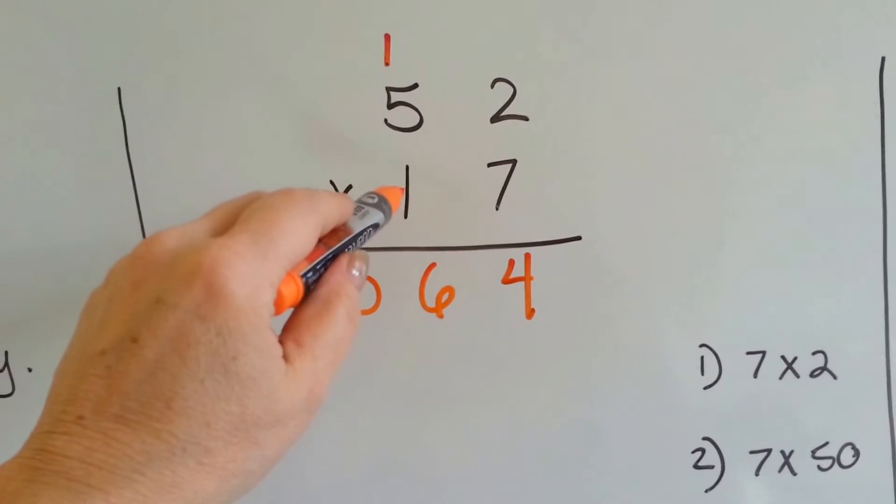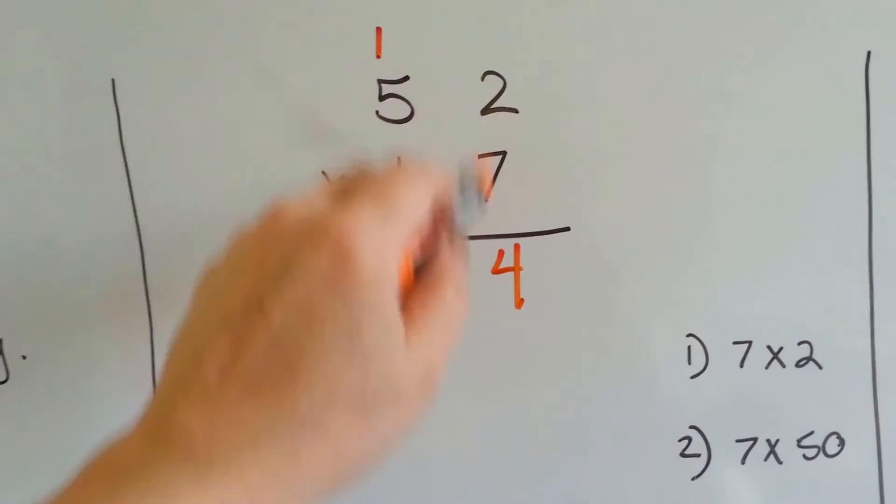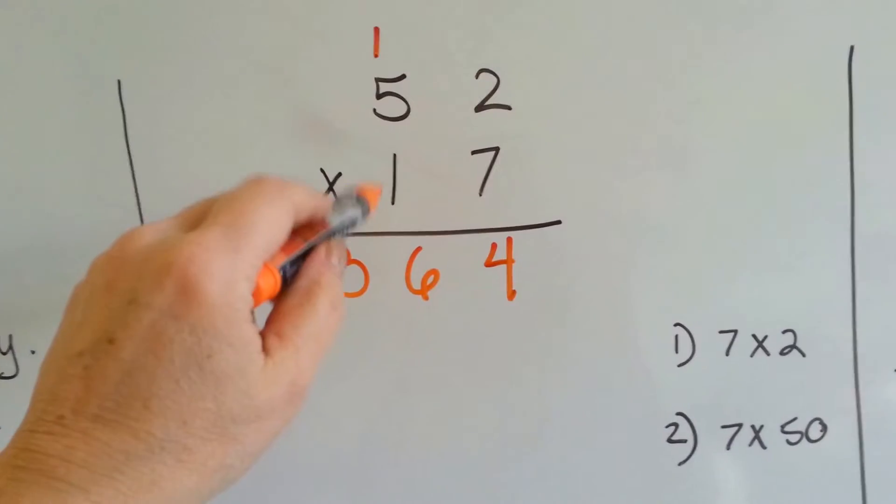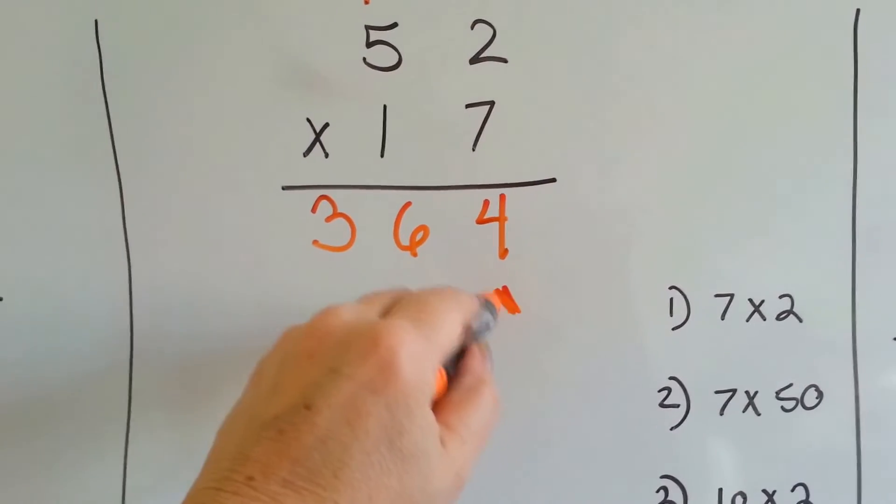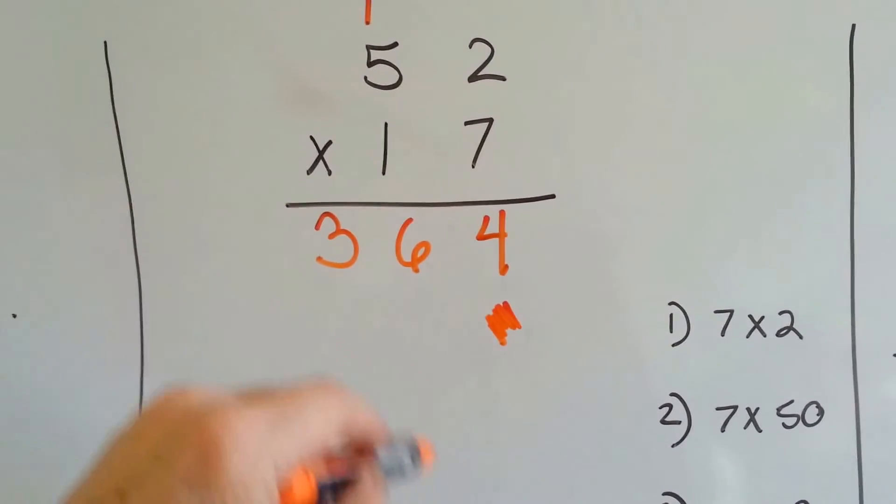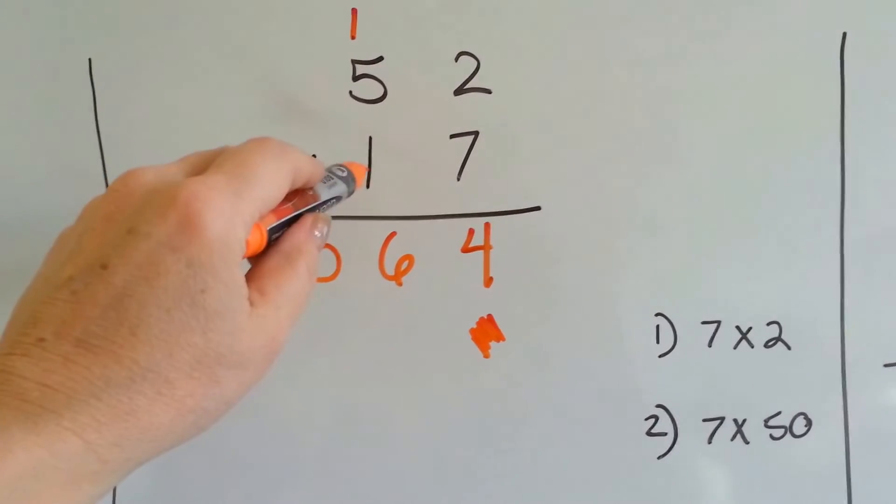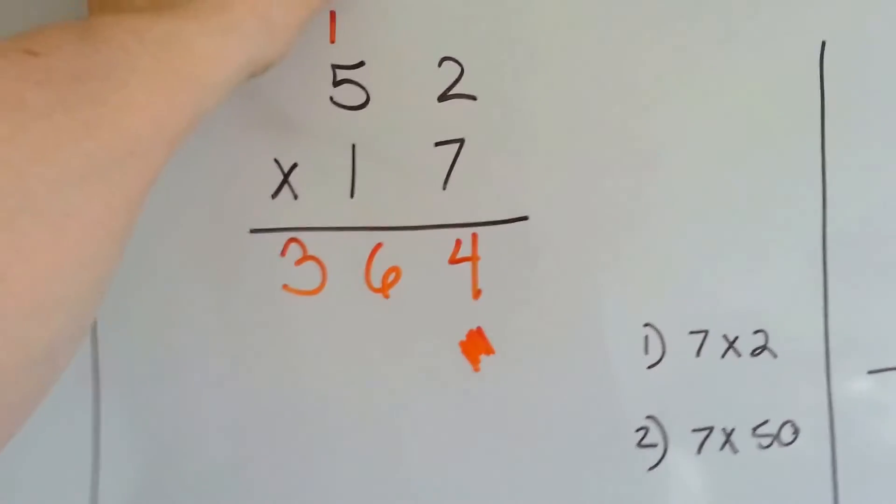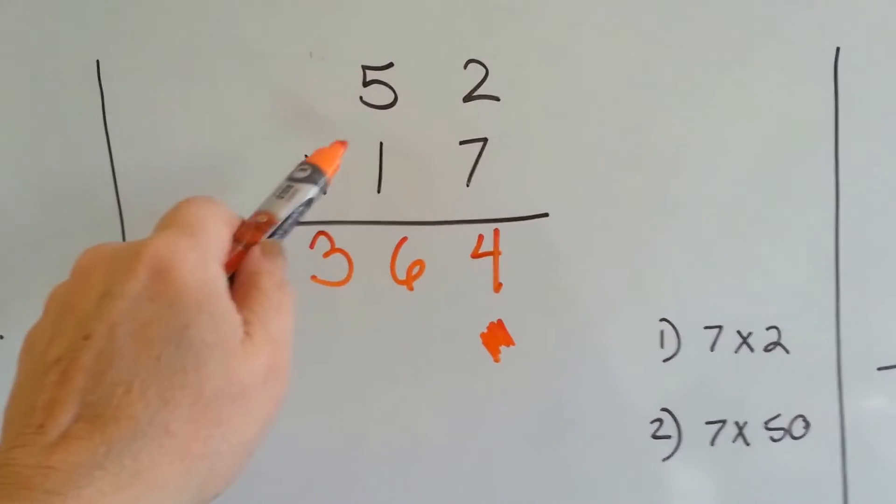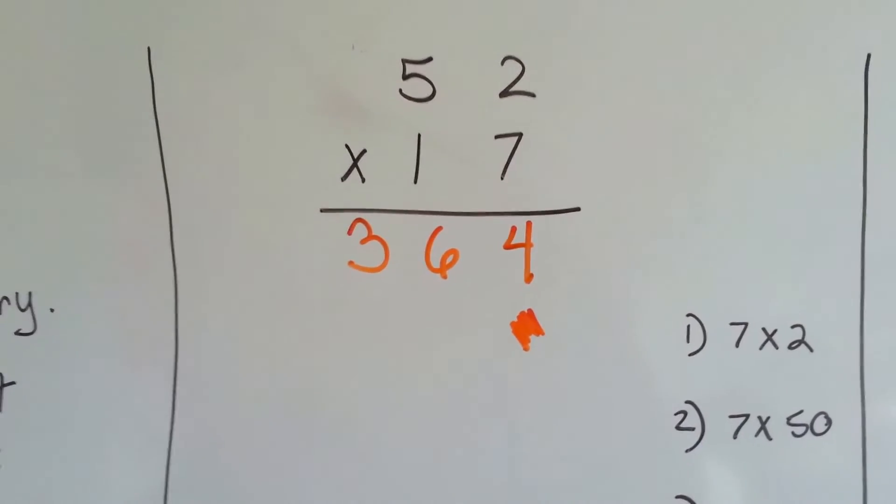Now remember, now that we're multiplying this tens space, we did the 7 going to both of them. Now that it's the 1's turn, we ignore this spot right here. See? We're going to immediately go to the tens space, because we're multiplying tens. Now because this was the carryover from doing the 7, we have to get rid of it, otherwise it could confuse us.